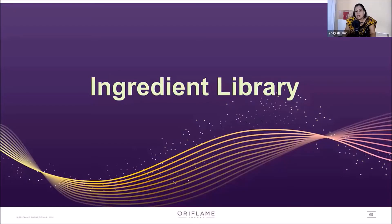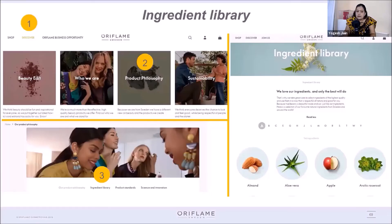A great initiative is the ingredient library. We don't know about all the ingredients in products. So, we can choose a good product by using this ingredient library. When you go to Oriflame's website, you will find an ingredient library there. Every ingredient mentioned in the product is listed, and you will get a lot of knowledge about the ingredients, which will help you find a good product.